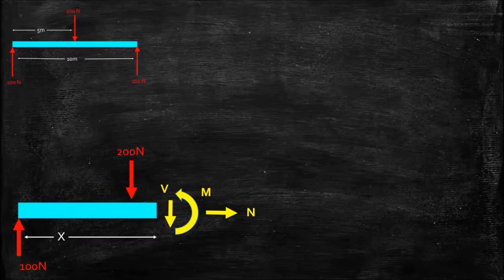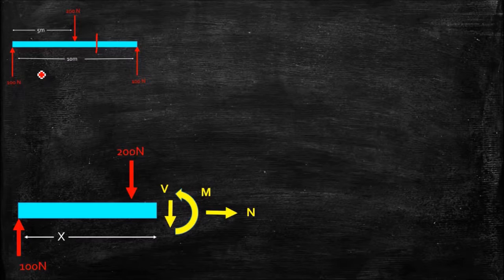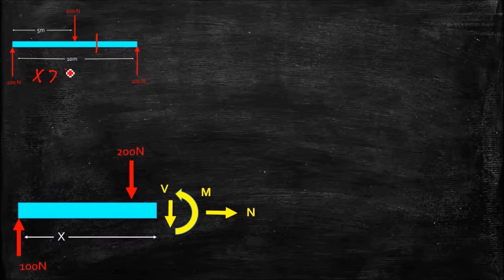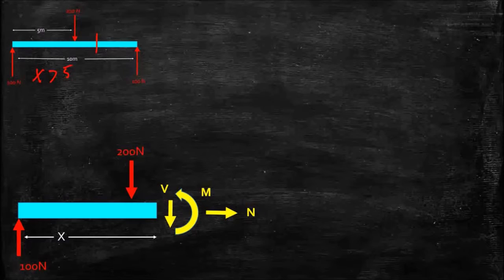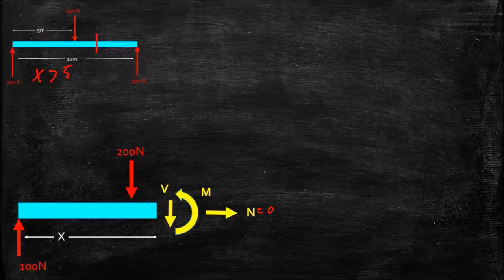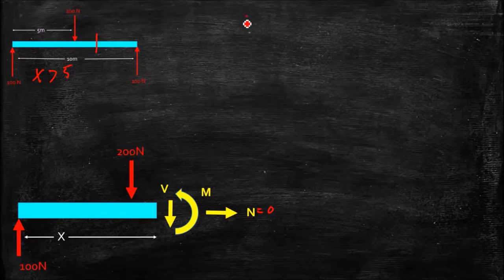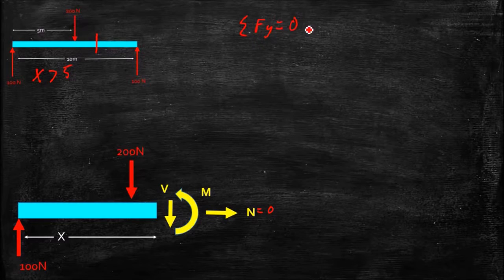Now here we're taking a section over here to the right of that applied force, so x is greater than 5, and I'm going to ignore x exactly equal to 5 for just the moment. Again, our normal force is zero by inspection, so if we look at the sum of the forces in the y direction, that's equal to zero for equilibrium.